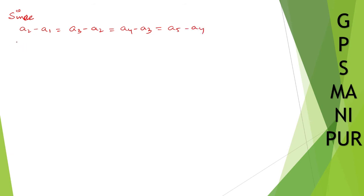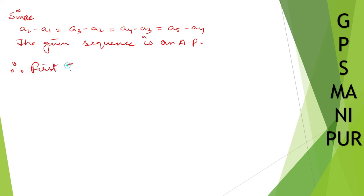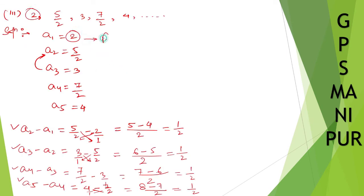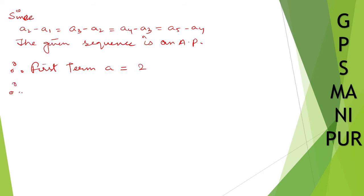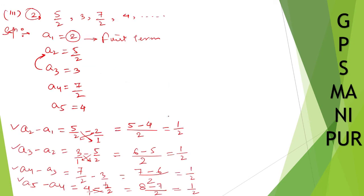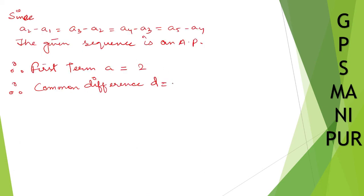Since A2-A1 = A3-A2 = A4-A3 = A5-A4, all are equal. Therefore the given sequence is an AP. First term A is equal to 2. Common difference D is equal to 1/2.